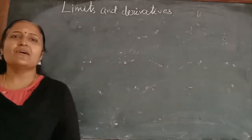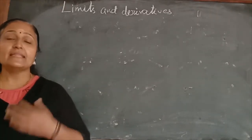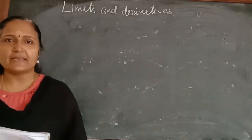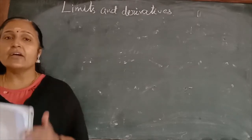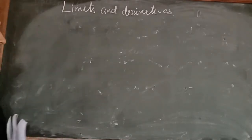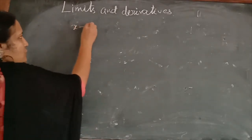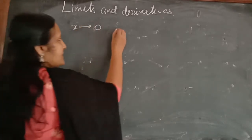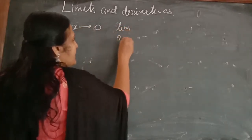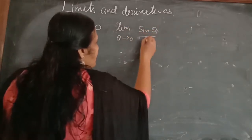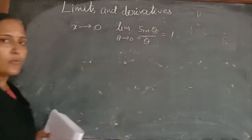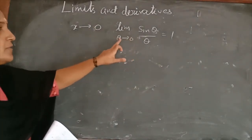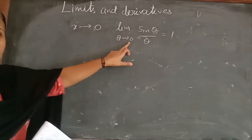Hello my dear students. Hope you all are fine and safe at home. In the previous classes we discussed about the limits of trigonometric functions. We discussed the cases when our limit x tends to 0 only, because we know the result: limit theta tends to 0, sin(theta)/theta = 1. We can use this formula when theta tends to 0 only.